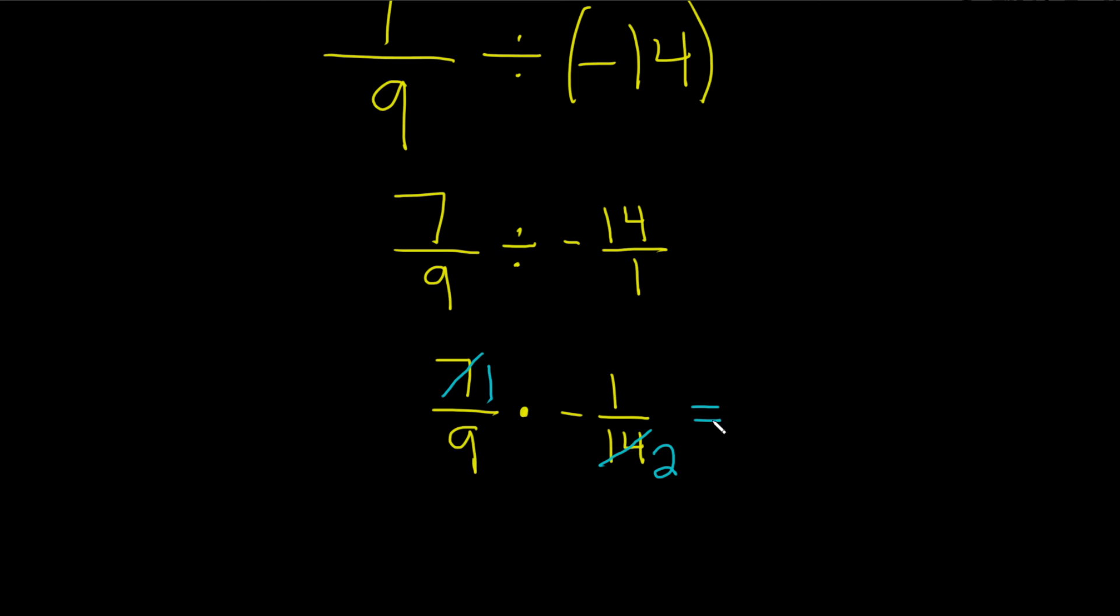So this is equal to, and now we can multiply by just multiplying straight across. 1 times 1 is equal to 1 over, oops, let me give myself some more room here. 1 over 9 times 2 is equal to 18.